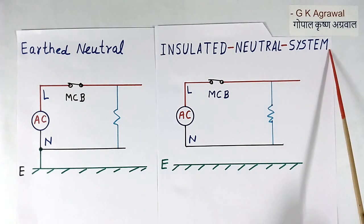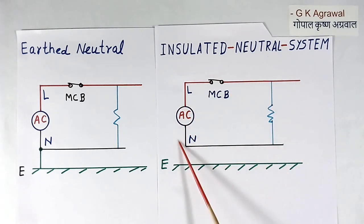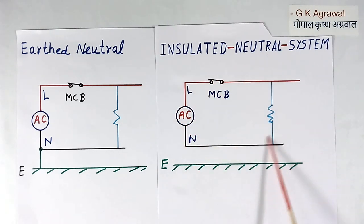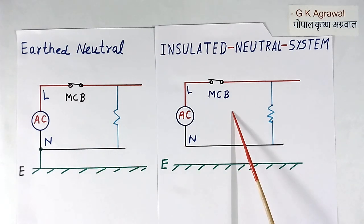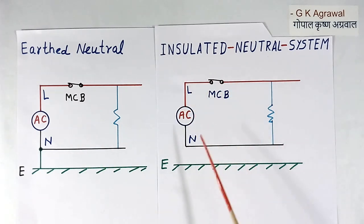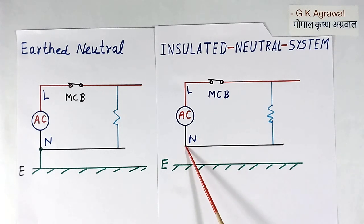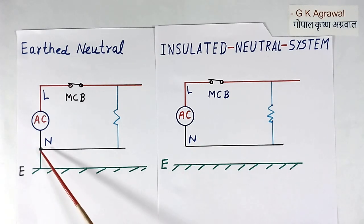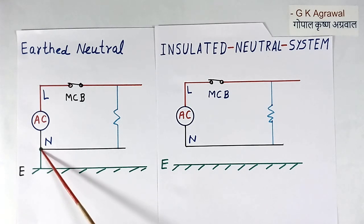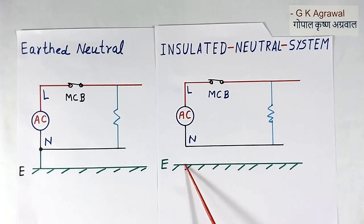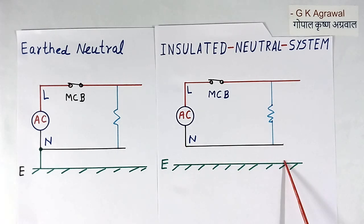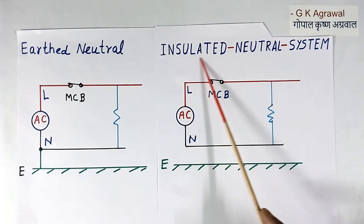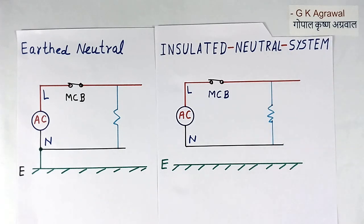The insulated neutral system is shown in this diagram. The difference between this and the earth neutral system is that in the insulated neutral system, neutral is not connected to earth. Here it was connected to earth, but here there is no connection. Neutral is insulated from earth, so it is called the insulated neutral system.